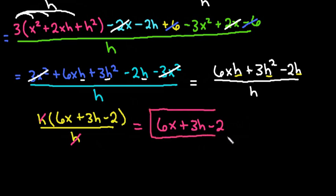So the final answer for this one would be 6x plus 3h minus 2. And if you continue on into calculus, like I said, I use this for my college algebra class, but if you continue on into calculus, you will touch on this quite a bit at the beginning of a calculus course because it does help you to define derivatives.